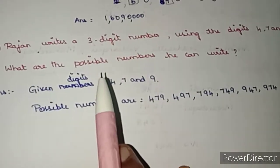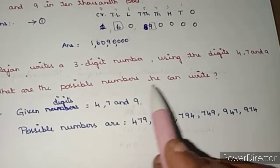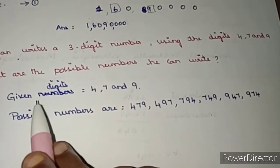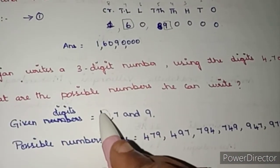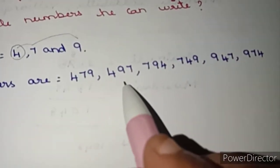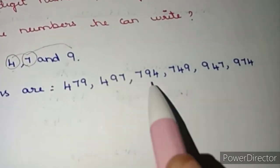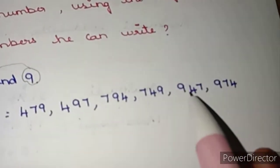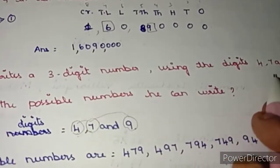Rajan writes a 3-digit number using digits 4, 7, and 9. What are the possible numbers he can write? The given digits are 4, 7, and 9. Taking 4 first: 479 and 497. Taking 7 first: 794 and 749. Taking 9 first: 947 and 974. These are the 6 possible numbers we can form with the given digits.